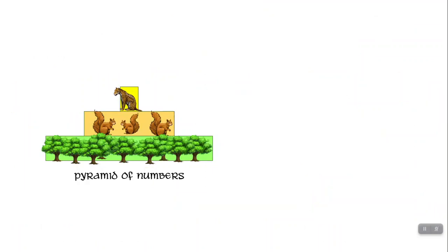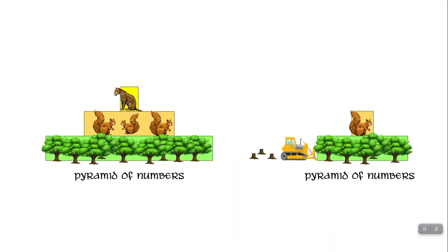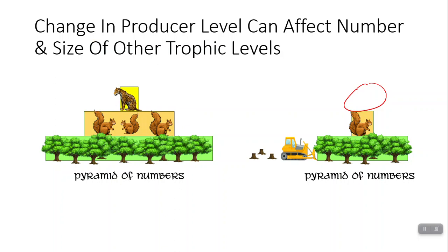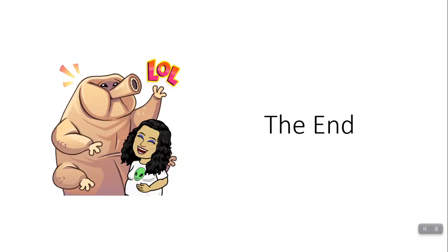You can also have something that directly affects producers — for example, human activity clearing out a forest. That is going to affect the trophic levels in that area. Decreasing the number of trees could decrease the number of primary consumers like squirrels, and once again we lose our top predators. When you change the number of producers in an ecosystem, that's going to affect everything else. All right, that was it — it was a short one, and we'll start Unit 2 soon.